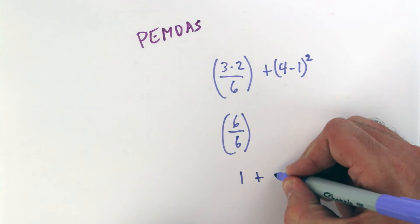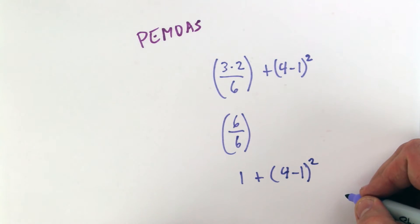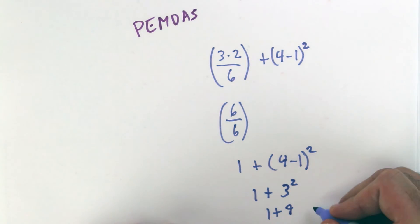This we still have plus 4 minus 1 squared. So we're going to finish this off. 4 minus 1 is 3. We keep the squared. So we have 1 plus 3 squared. And 3 squared is 9. So we have 1 plus 9. Hopefully you can see this. Which comes out to 10.